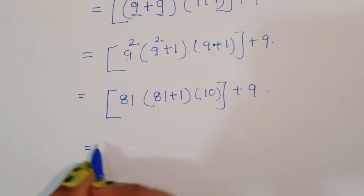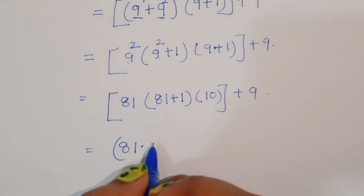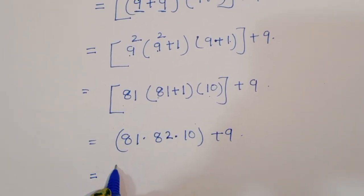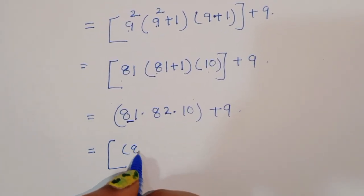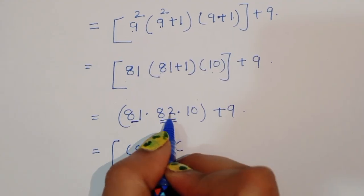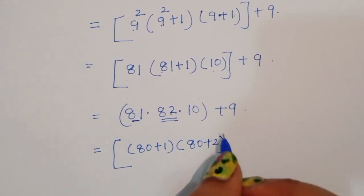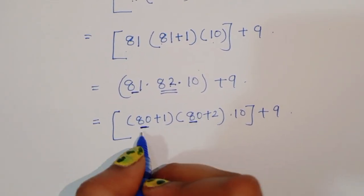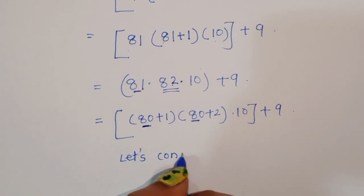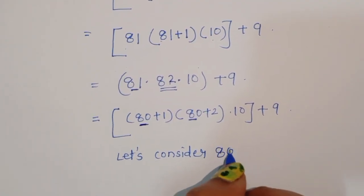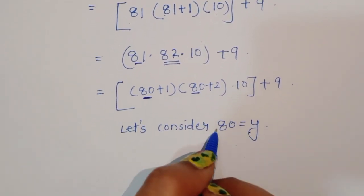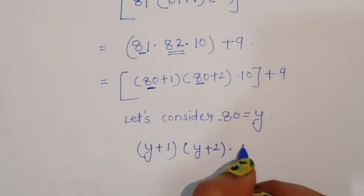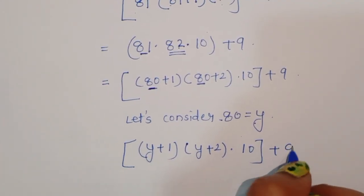Now we can write 81 as 80 plus 1, and 82 as 80 plus 2. So this becomes 80 plus 1 times 80 plus 2, times 10, plus 9. Let us consider 80 equal to y. Then we get y plus 1 times y plus 2, times 10, plus 9.